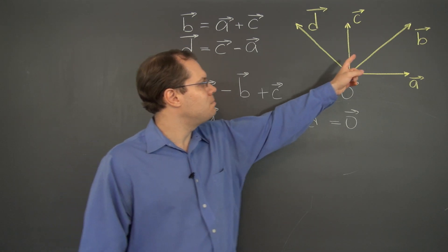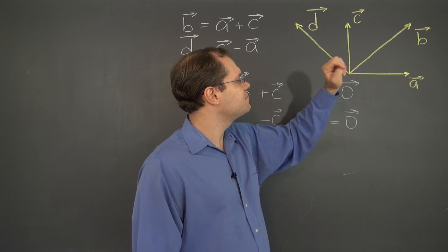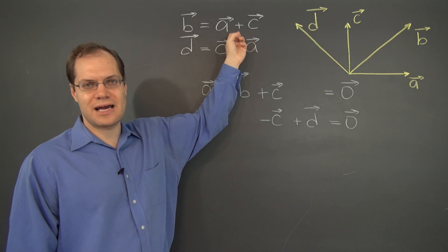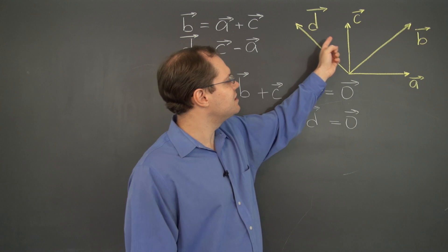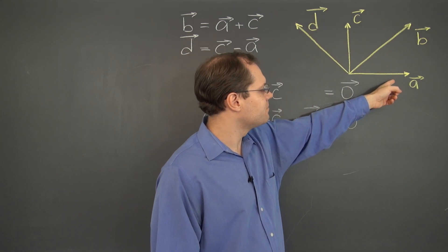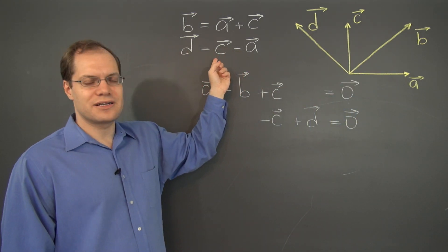We notice that b is the sum of a and c, that relationship is captured right here algebraically, and d is the difference of c minus a, and that relationship is right here.